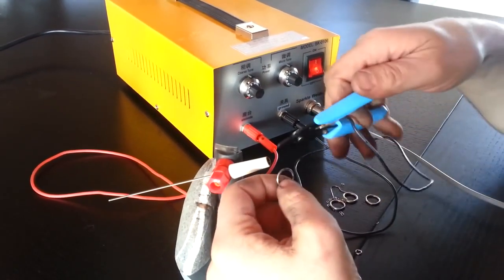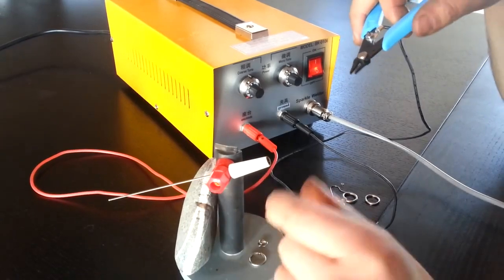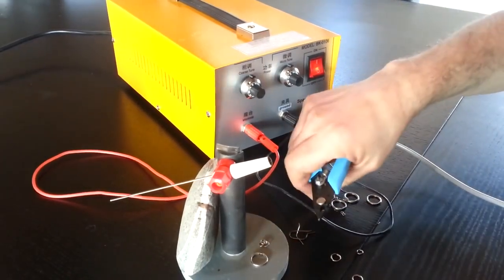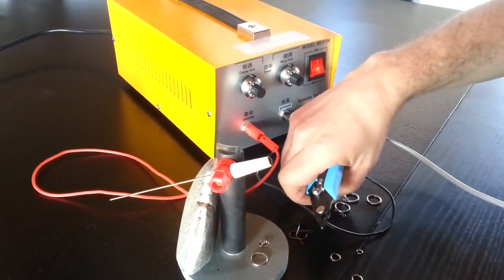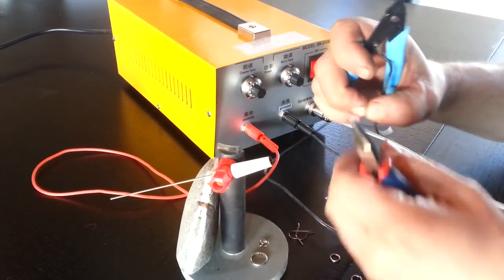About the maximum that you can do with this welder in one weld is about 20 gauge. On the other hand, on the low end, you can go down to 30 or 40 gauge wire.